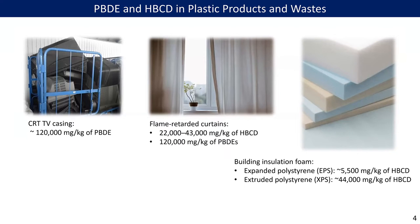I'd like to show some concentrations in actual products and waste. For CRT TV casings, we detected up to 12% PBDEs, mostly deca-BDE. Many textiles are flame-retarded by HBCDs and PBDEs. Most flame-retarded curtains in Japan were treated with HBCD at 2–4%. Building insulation foams include EPS and XPS — EPS contains up to 0.5% HBCD, while XPS usually contains about 4% HBCD.